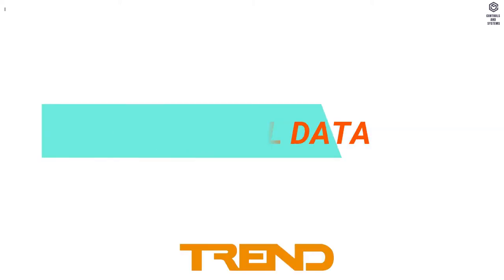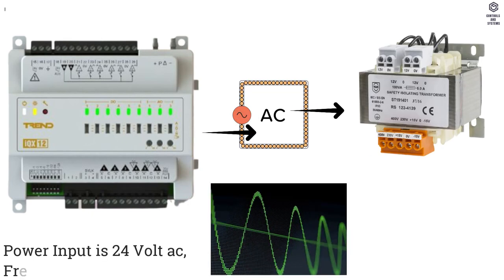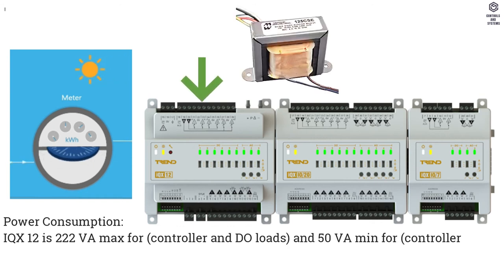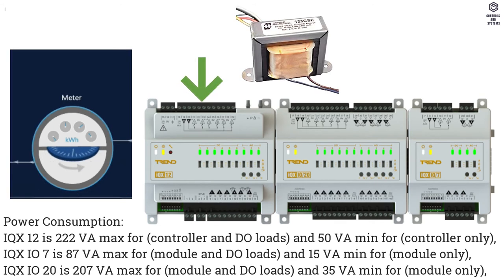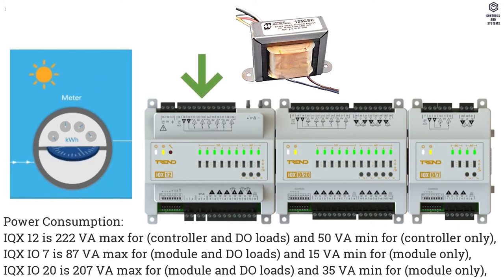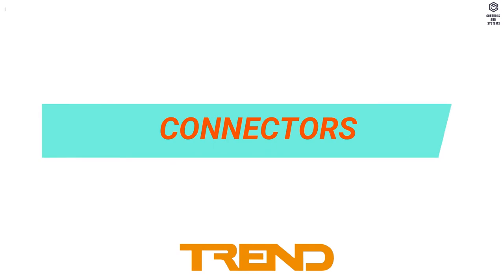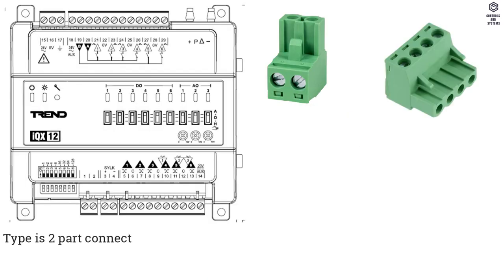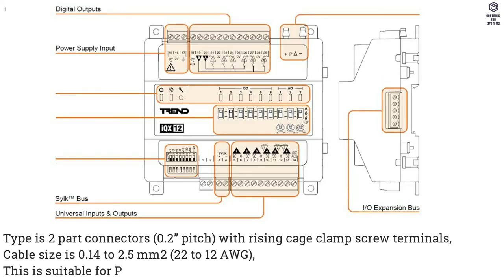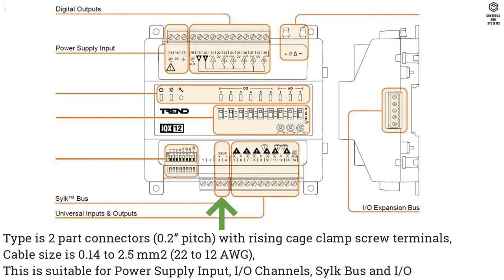Electrical Data — Power Input is 24V AC, Frequency is 50 or 60 Hz. Power Consumption: IQX12 is 222 VA maximum for controller and DO loads, and 50 VA minimum for controller only. Connectors: Type is 2-part connectors, 0.2 pitch, with rising cage clamp screw terminals. Cable size is 0.14 to 2.5 mm², suitable for power supply input, IO channels, Silk Bus, and IO Bus.